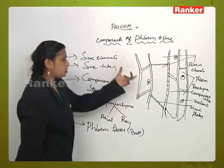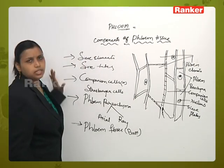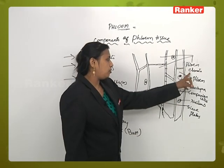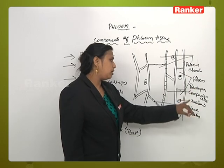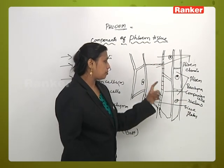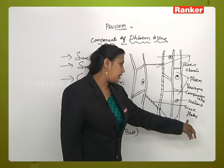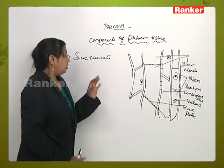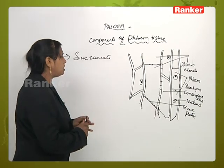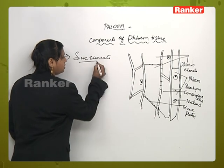This is the structure of the phloem tissue where we can see all the elements present in the phloem components — this is a rough diagram. We can see phloem elements, phloem parenchyma, the nucleus, and the tissues adjacent to the phloem cells, called companion cells and sieve plates. First, we will be dealing with the sieve elements and their important characteristics.